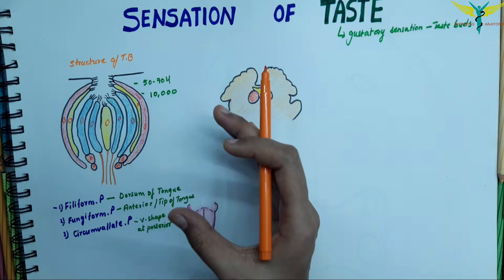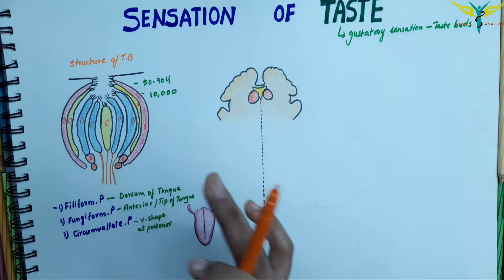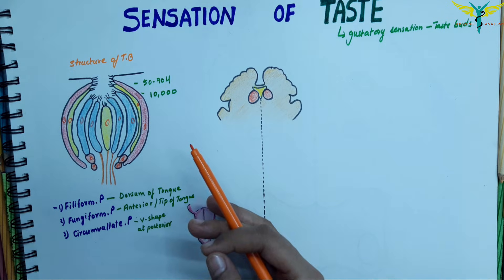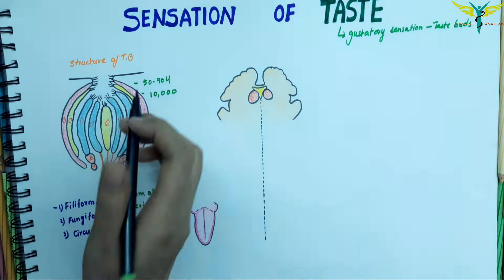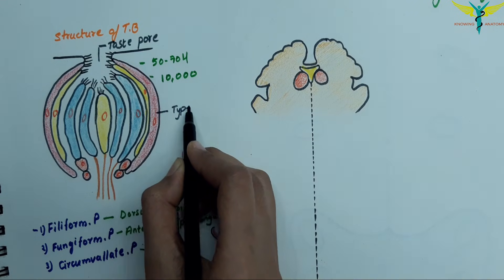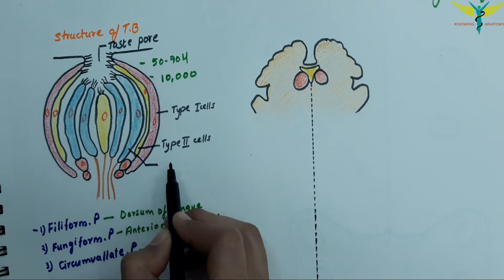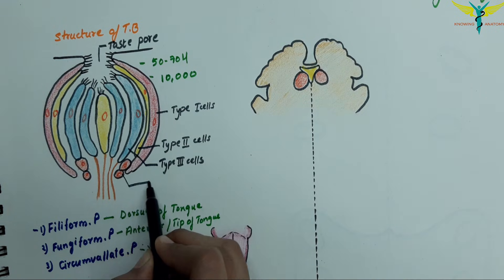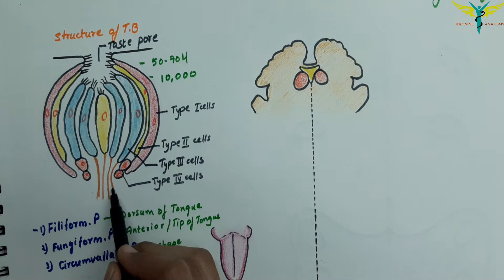A taste bud is a bundle of taste receptor cells with supporting cells embedded within the epithelial covering of the papillae. Each taste bud contains about 40 modified epithelial cells, divided into four groups. Looking at the diagram: there is the taste pore, Type 1 cells, Type 2 cells, and Type 3 cells.